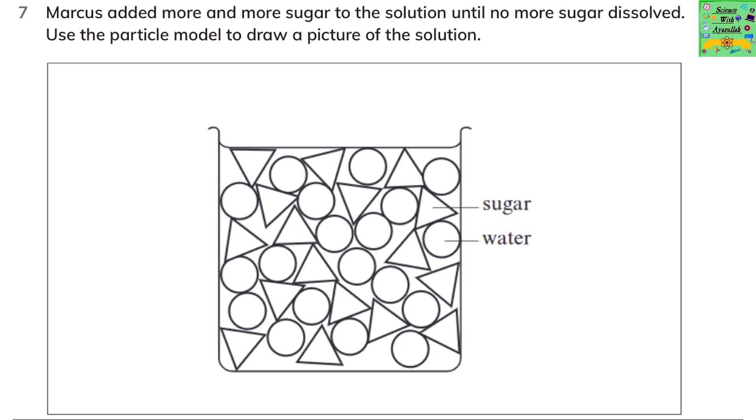Marcus added more and more sugar to the solution until no more sugar could be dissolved. Use the particle model to draw a picture of the solution. The picture would be something like this. In this case, there would be more sugar molecules than water molecules.